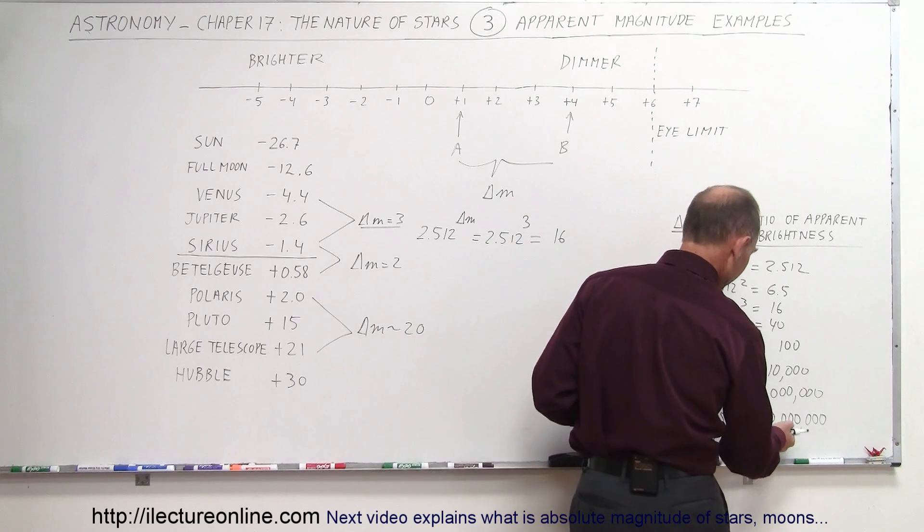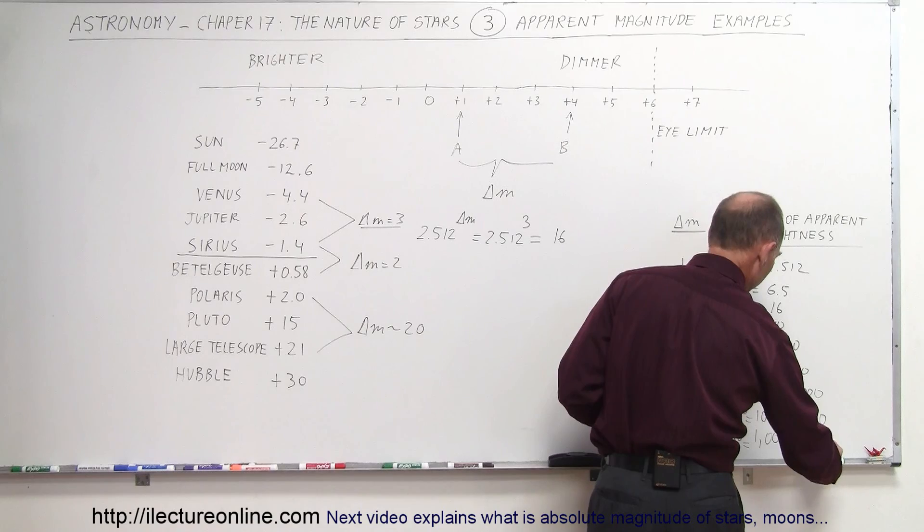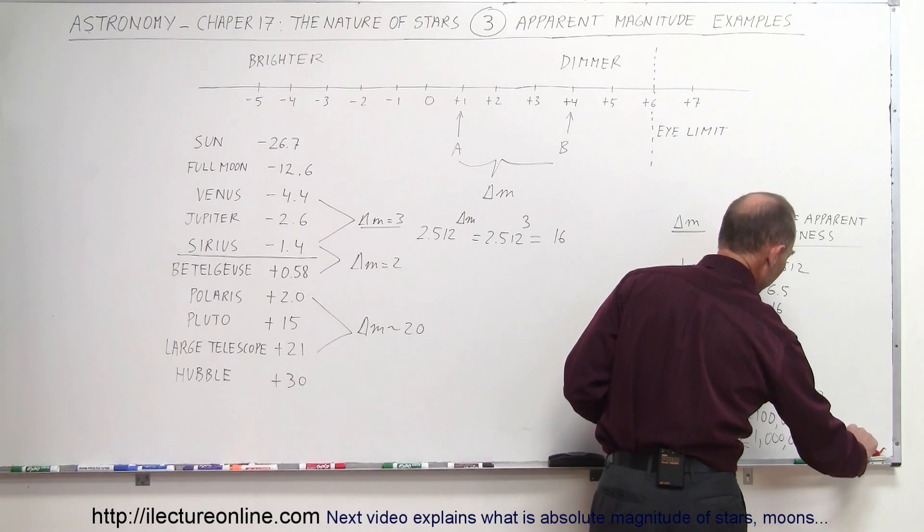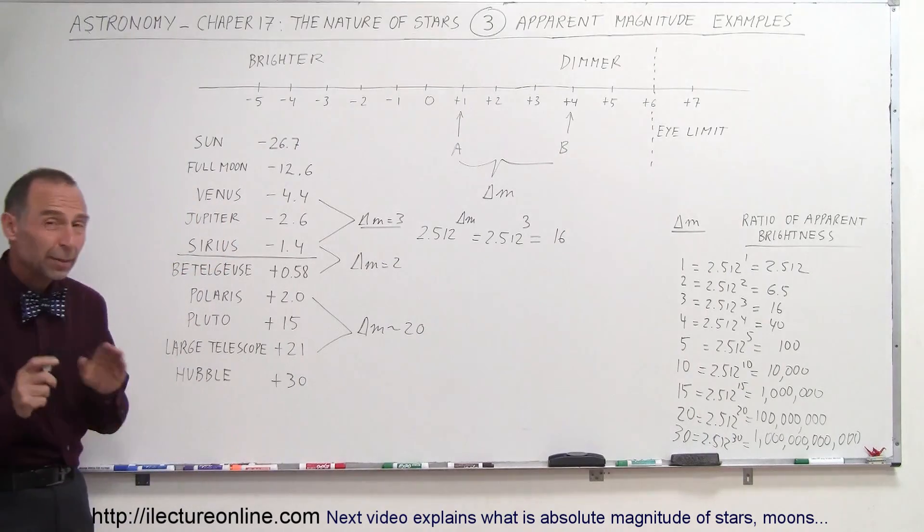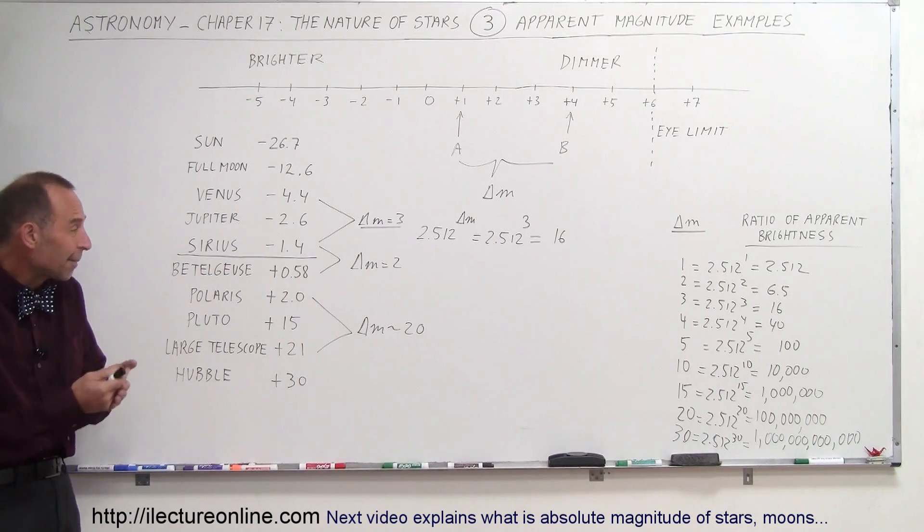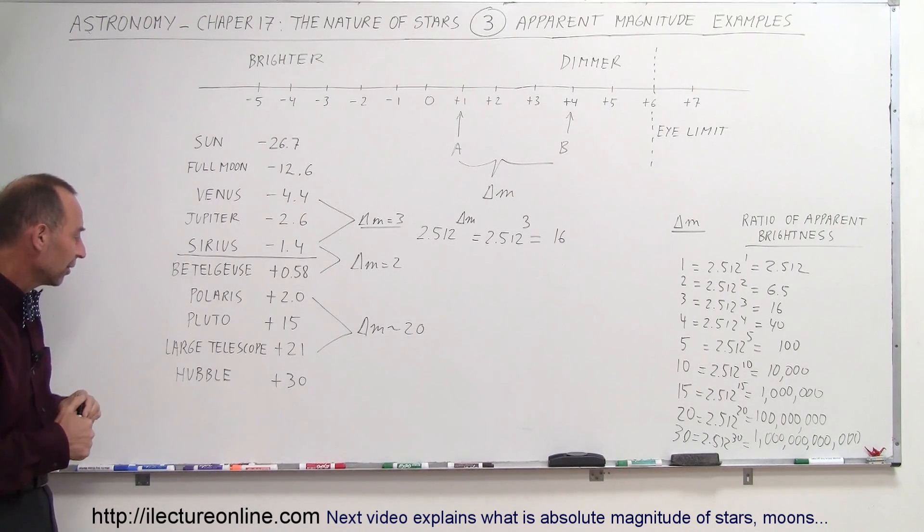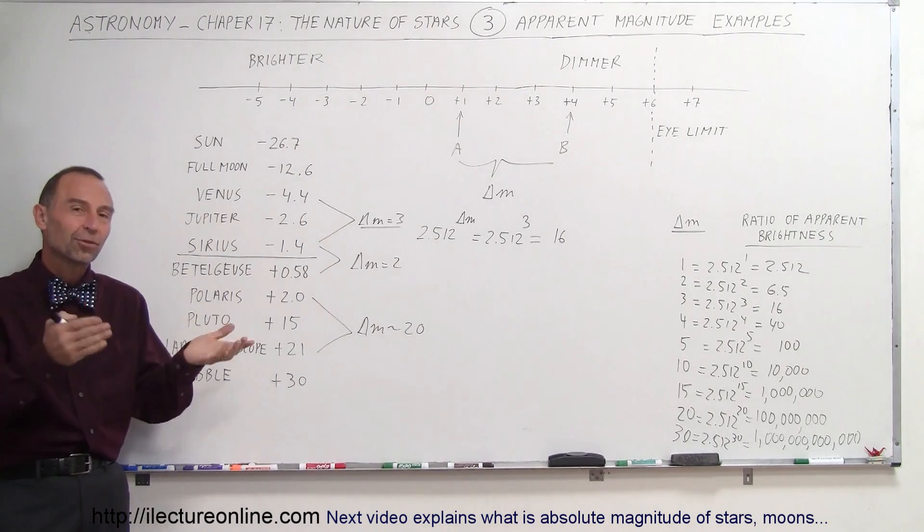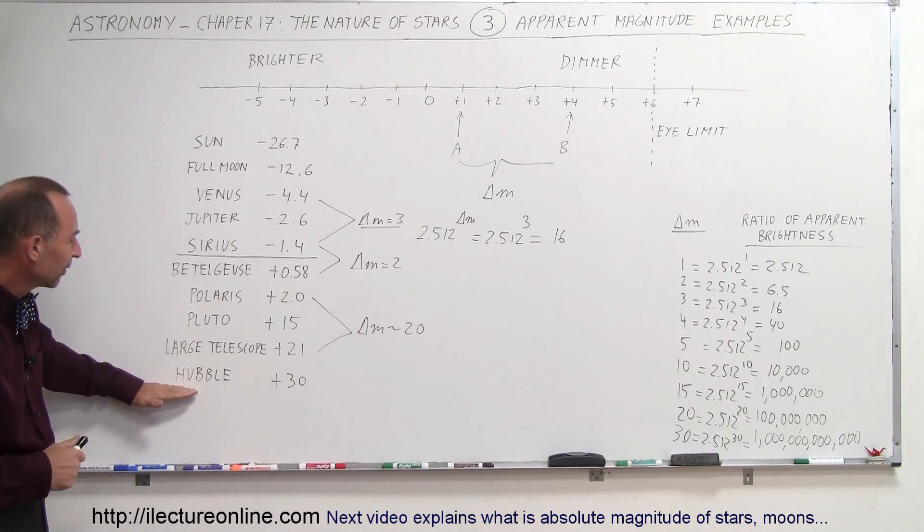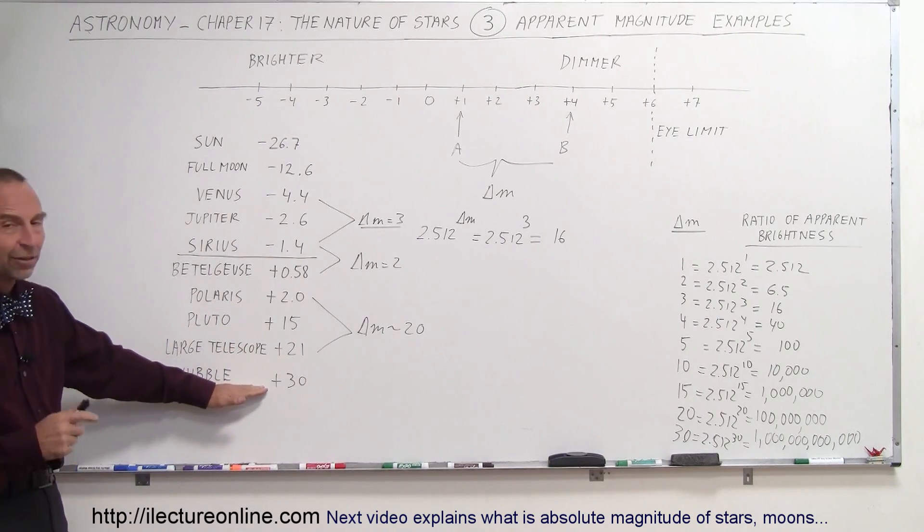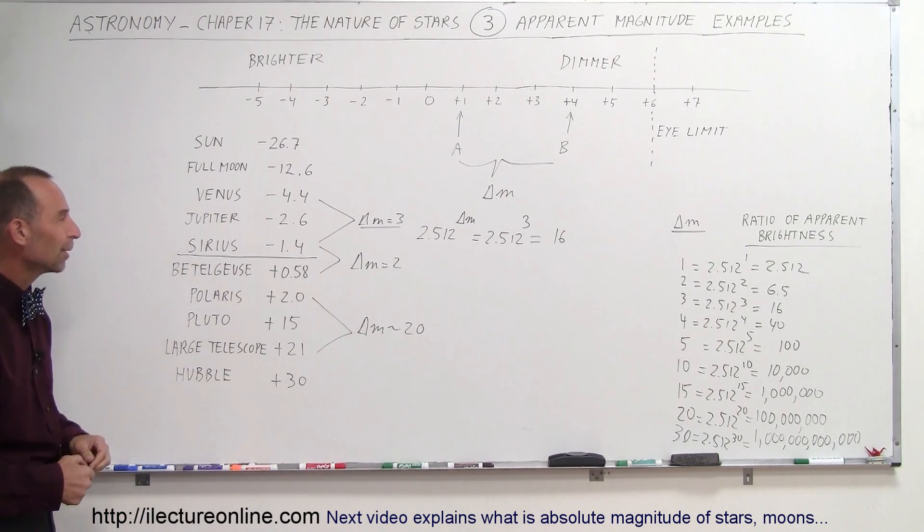That would be ten billion, that would be one trillion times. That's a million, that's a billion, and that's a trillion. In other words, the Hubble Space Telescope can pick up images that are a trillion times dimmer than a star like Betelgeuse. It's absolutely amazing what we can actually see with Hubble. The reason of course is it's up in space, there's no atmospheric interruption, no atmospheric blurring of any type, so you can see very dim images to an apparent magnitude of plus 30.